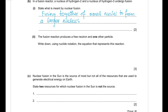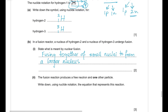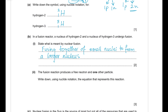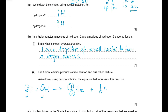Part (b)(ii): the fusion reaction produces a free neutron and one other particle. Write the nuclear equation. Hydrogen-2 + hydrogen-3 → helium-4 + neutron. The helium nucleus has 2 protons and 2 neutrons (mass number 4). Checking: mass numbers 2 + 3 = 5 on the left; 4 + 1 = 5 on the right. Proton numbers: 1 + 1 = 2 on the left; 2 + 0 = 2 on the right. The equation is balanced.